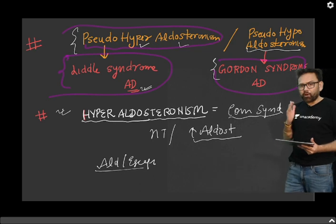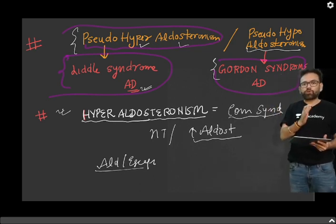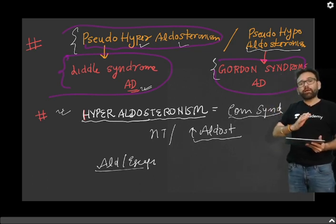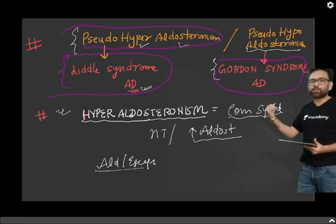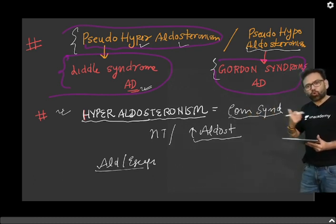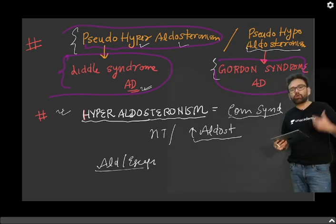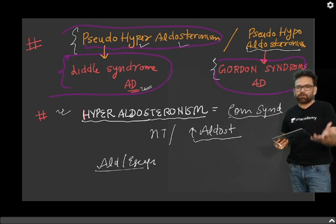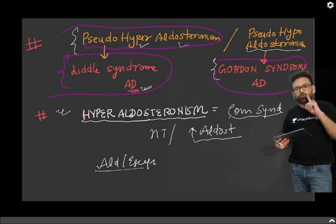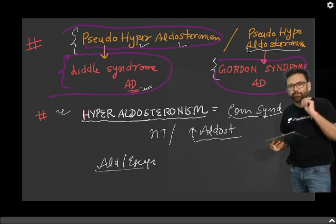Now, we differentiate pseudo-hyperaldosteronism from actual primary hyperaldosteronism, which is called Conn syndrome. In Conn syndrome, of course, there will be more aldosterone — aldosterone will be more — and there will be hypertension, and that will be responsive to spironolactone. One thing I want to discuss here is aldosterone escape.